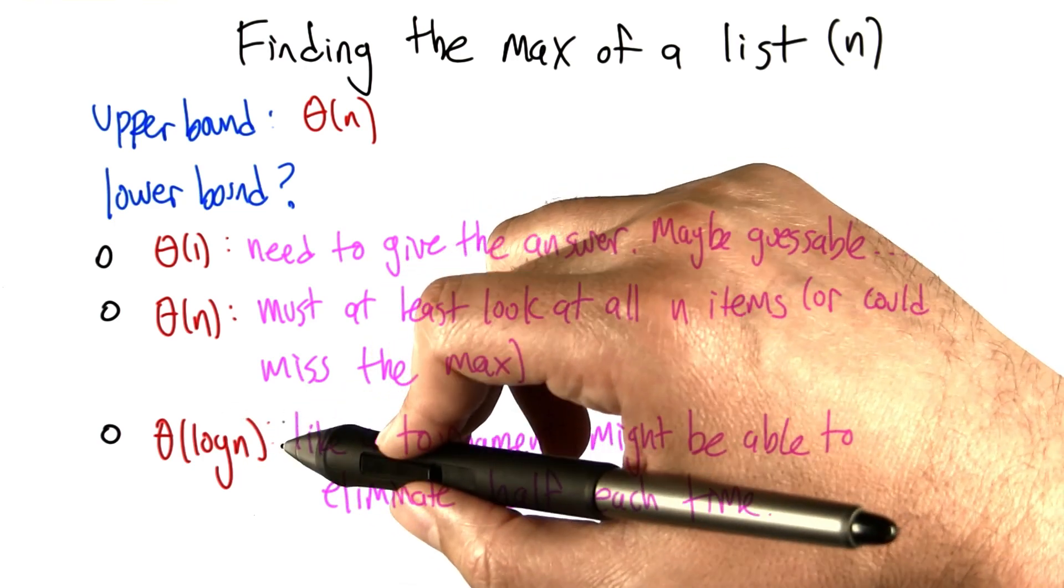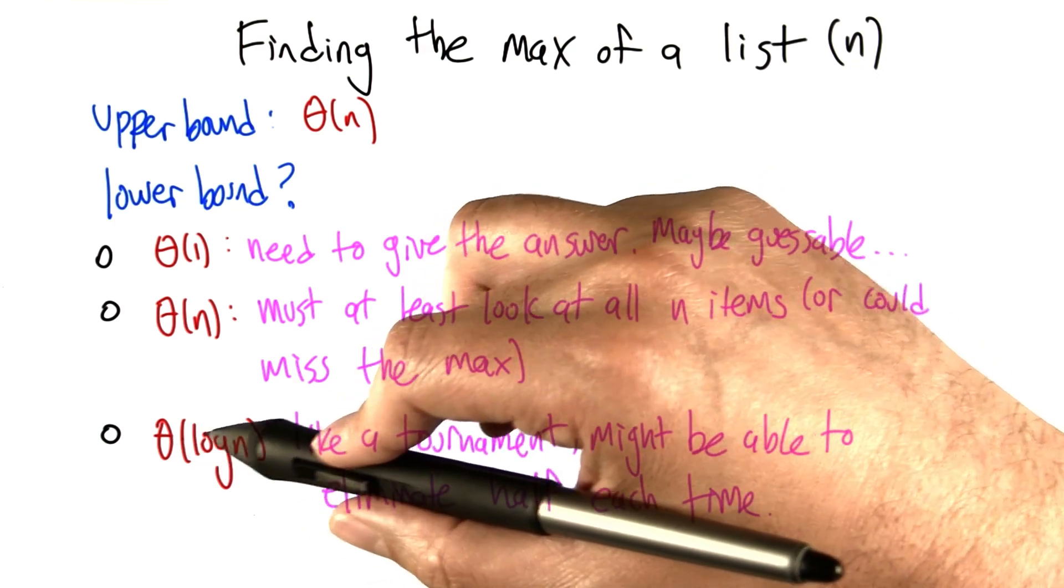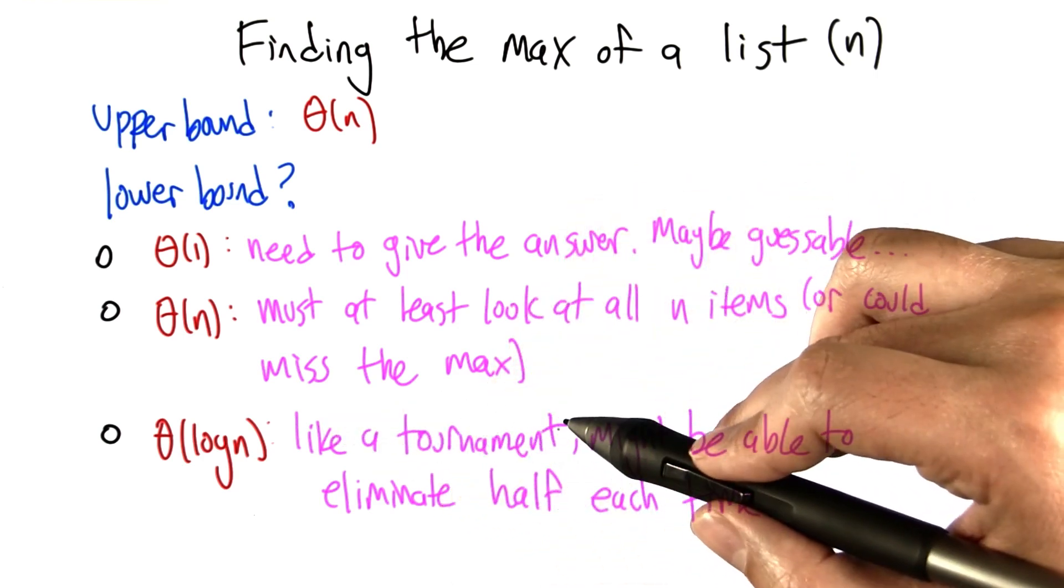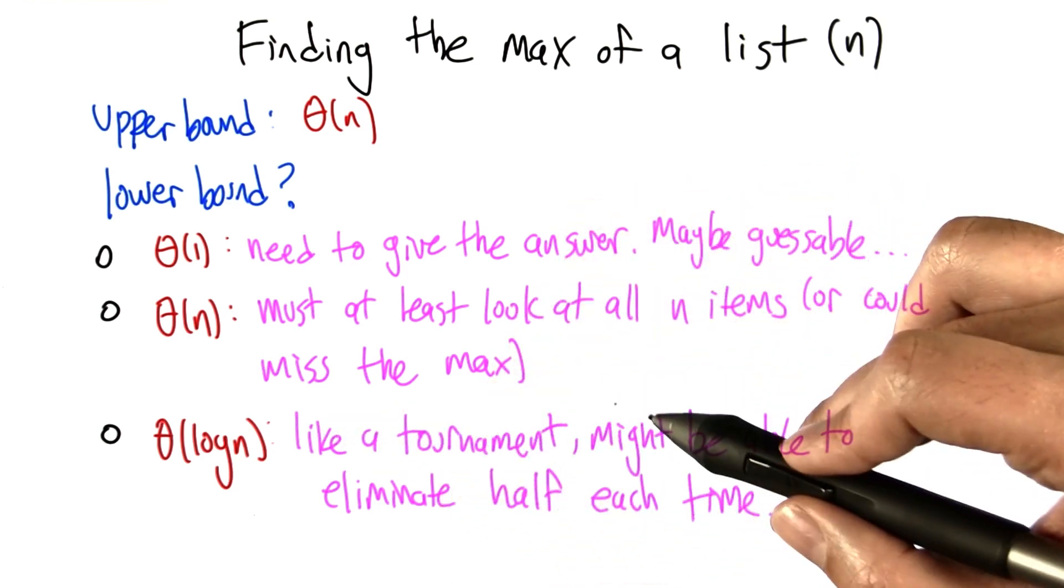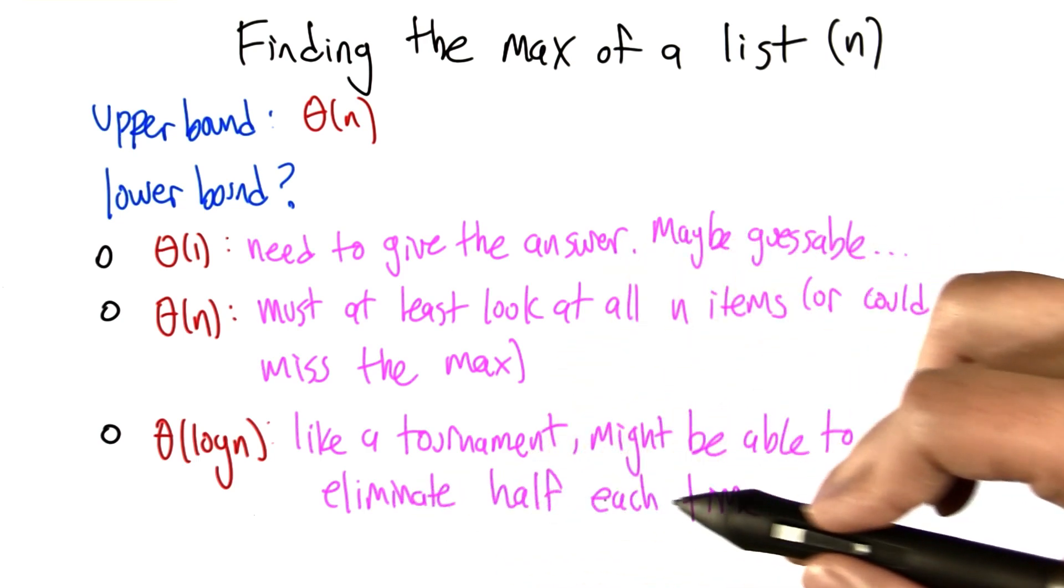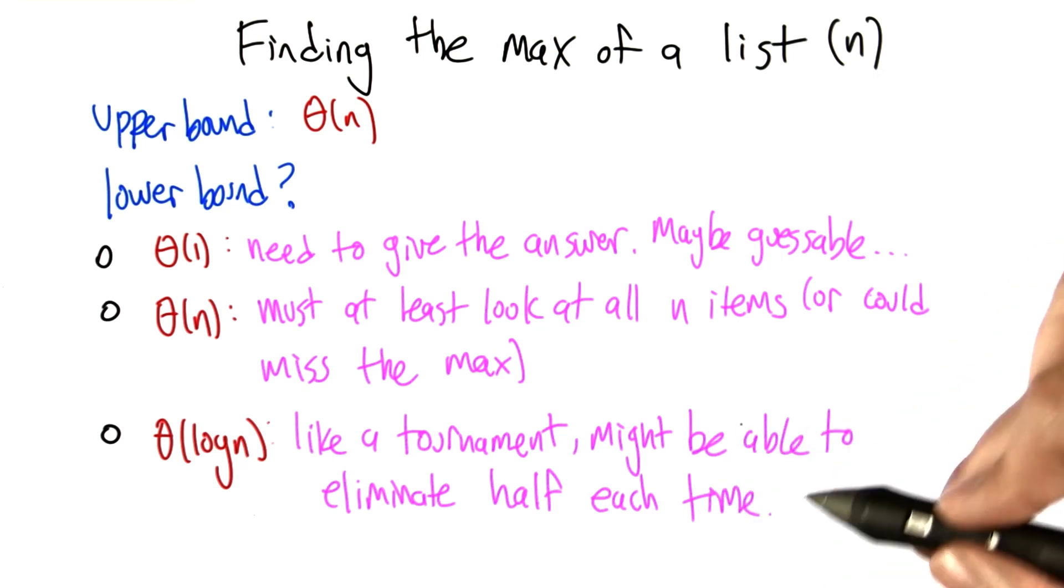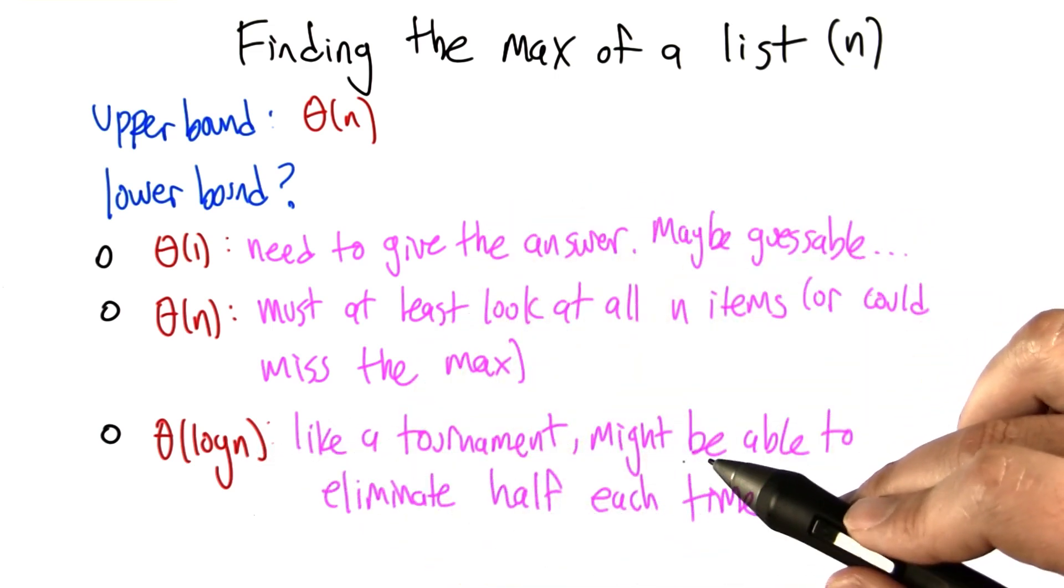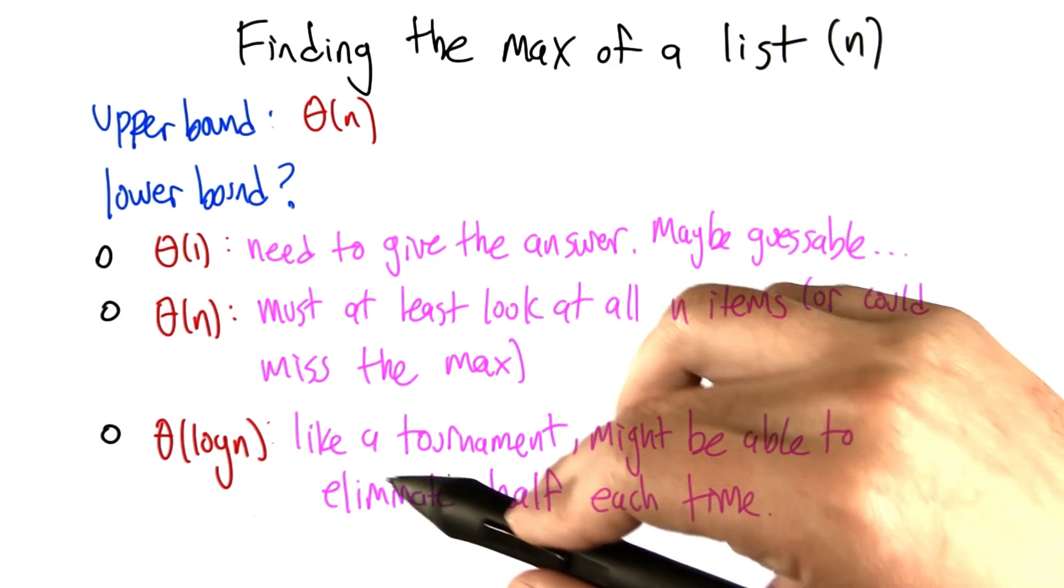Another argument might be something like this. We have a lower bound of log n for the problem, because finding the max is sort of like finding the winner of a tournament. You have to compare values against other values, and we might be able to actually eliminate half each time. And if we could do that, then the number of rounds that it would take before we have a winner in a tournament of n individuals in a single elimination tournament, it's like log n.